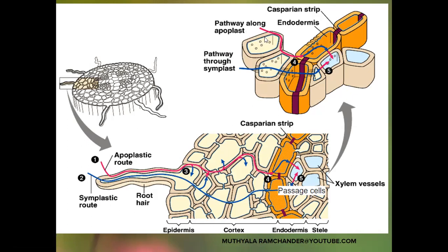Apoplast means the outside of the cell membrane area — the apoplast area is present between the cell wall and plasma membrane. Symplast means the inner portion of the cell, that is, the inner portion of the cell membrane. Apoplast means the outer area of the cell membrane, and symplast means the inner area of the cell membrane.